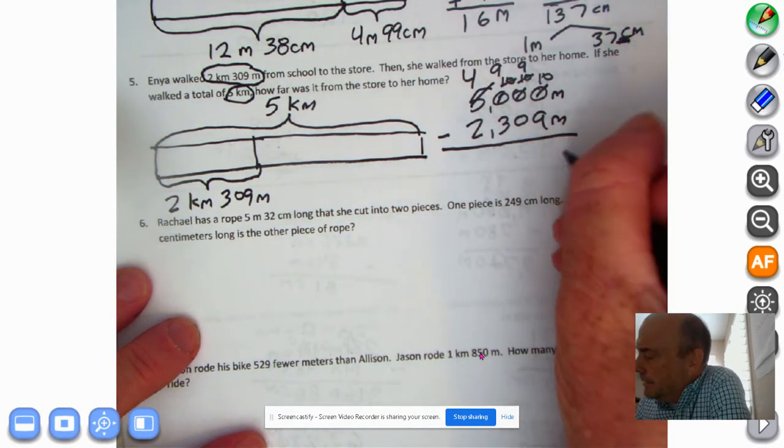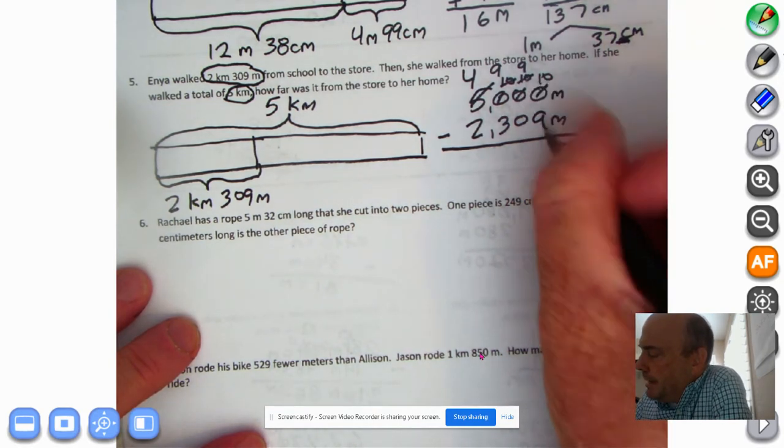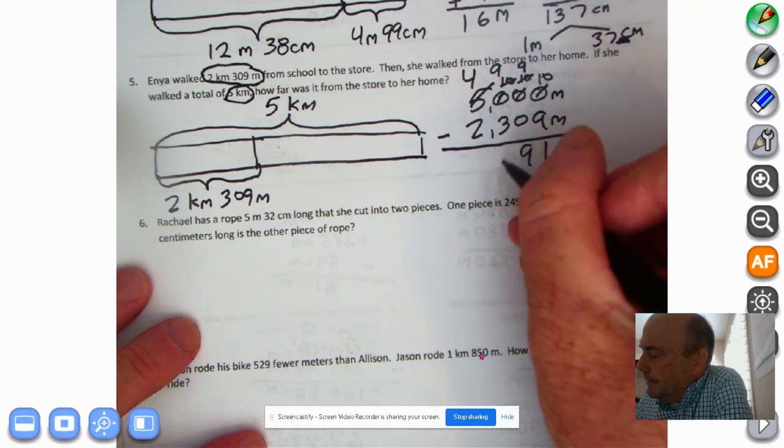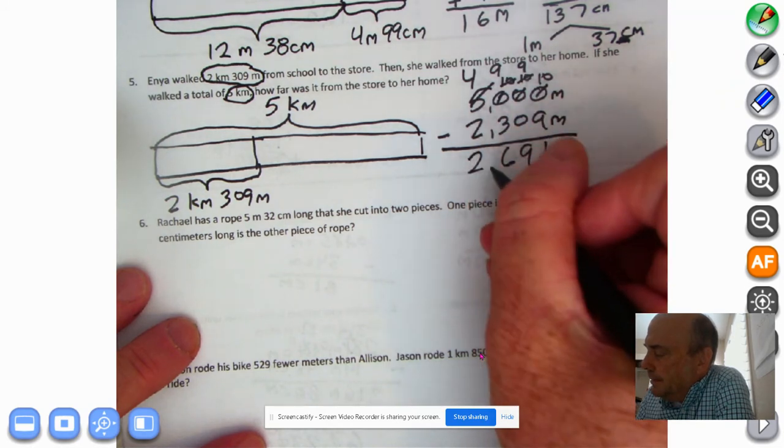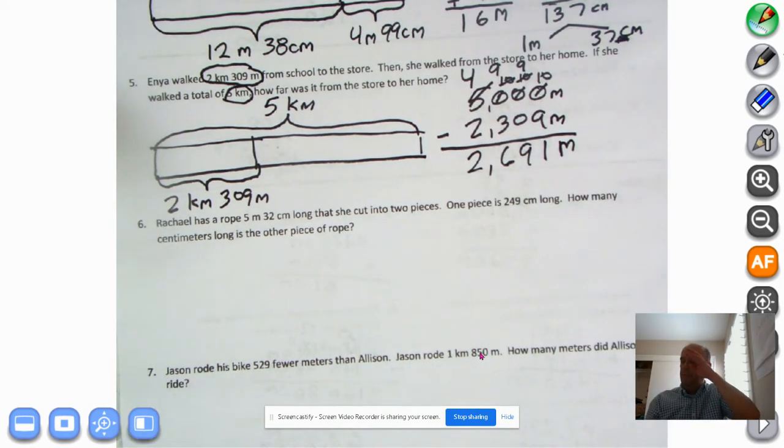So let's bring down our meters. 10 minus 9. 10 meters minus 9 meters. This is 1 meter. 9 minus 0 is 9. 9 minus 3 is 6. And 4,000 minus 2,000 is 2,000. So 2,691 meters.